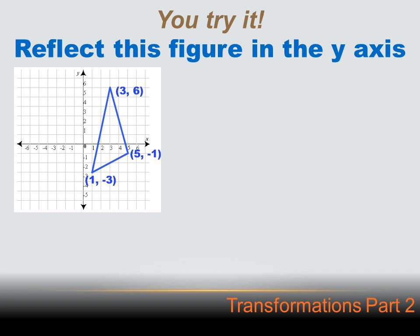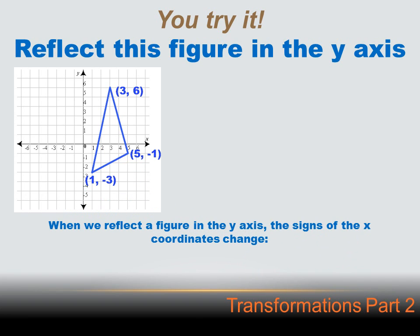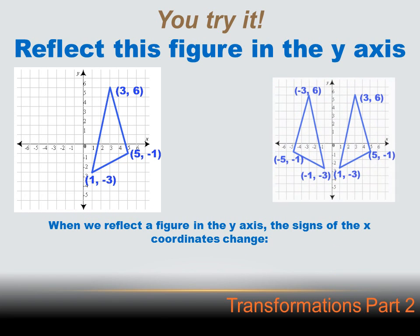Okay, we're asked to reflect this figure in the y-axis. And you remember when we reflect the figure in the y-axis, the y variables or the y-coordinates stay exactly the same, but the sign of the x-coordinates is changed. When we reflect the figure in the y-axis, the sign of the x-coordinates change. And sure enough, when we reflect this, the 3, 6 becomes minus 3, 6. The 5 minus 1 becomes minus 5 minus 1. And the 1, 3 becomes minus 1 minus 3.